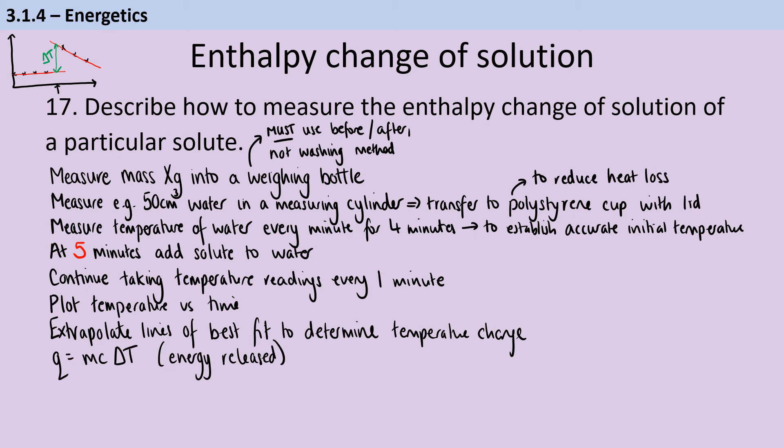Then we go back and we use that calculation Q is mc delta T. I would suggest that you do include this in your method, even though it's about data processing, not the actual experimental bit, because if we're trying to work out the enthalpy change of solution, we need the calculations in there. That will give you the energy released in joules, and of course, you need to convert that to kilojoules.